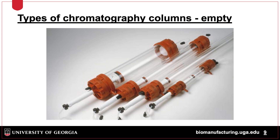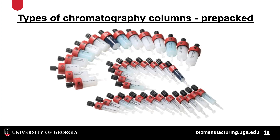Columns for chromatographic separations can come either as prepacked or can be packed into empty columns, as shown here. For research scale work, columns from 1.6 to 5 centimeters in diameter are typically used. These empty columns may need a specialized reservoir to fit all of the resin to be packed, as this comes diluted in a storage buffer and a pump system must be applied to pack the resin into the column. Prepacked columns come in a wide range of sizes, with the most common being either 5 milliliter or 1 milliliter.